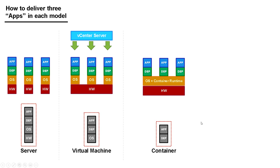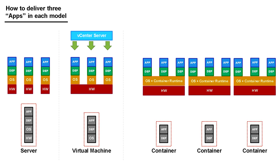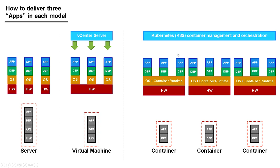It's so easy to deploy containers that once people start using them, they deploy more and more of them. What you can find is you've got lots and lots of containers running on lots of different hosts. And once you've got that many containers, you might want to look at a container management and orchestration platform — something called Kubernetes. Kubernetes is by far the most popular way of managing multiple containers across multiple hosts.